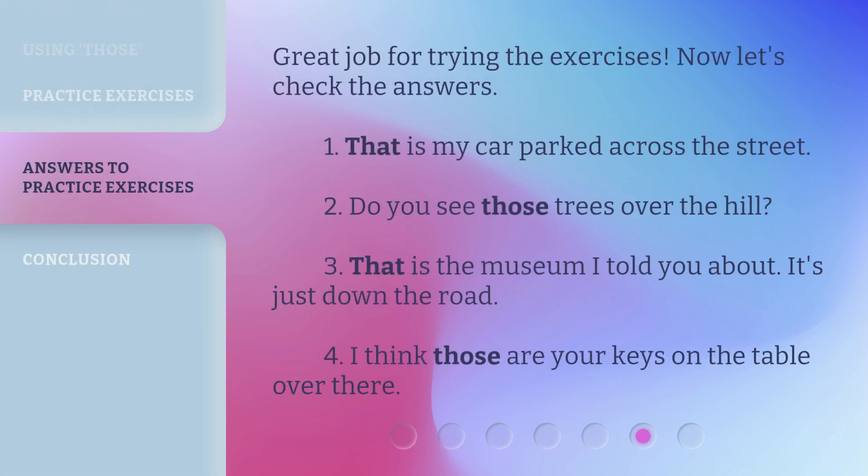Great job for trying the exercises. Now let's check the answers. One: That is my car parked across the street. Two: Do you see those trees over the hill? Three: That is the museum I told you about — it's just down the road. Four: I think those are your keys on the table over there.